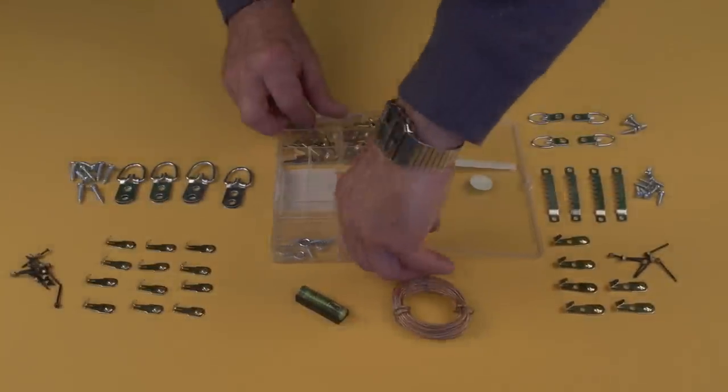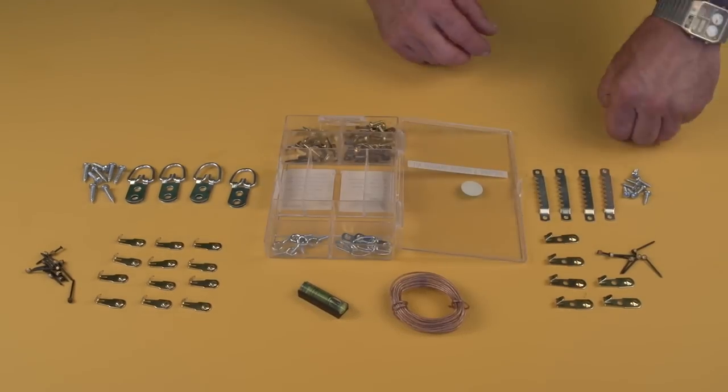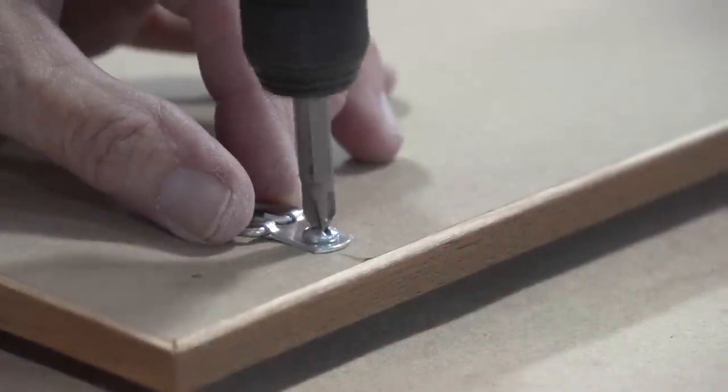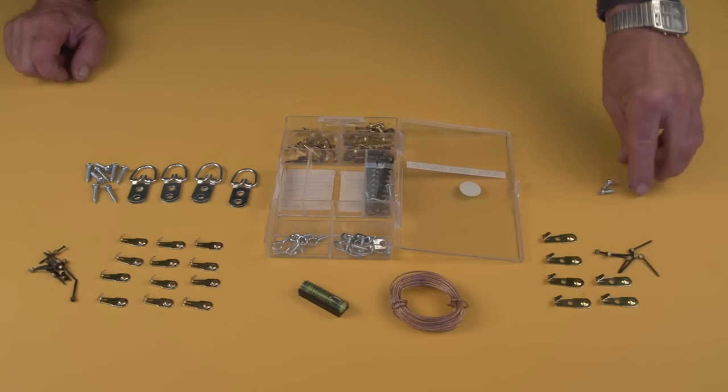Six pieces of screw eyes for that classic framing touch, four pieces of medium-weight hangers with screws, four pieces of sawtooth hangers with screws.